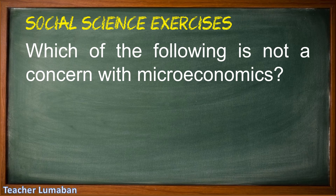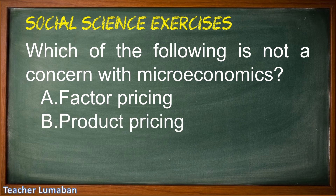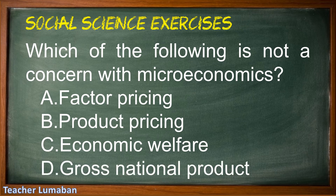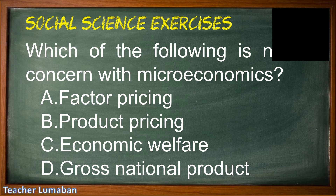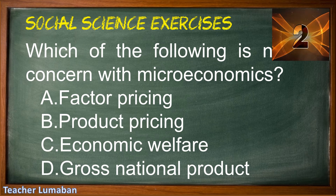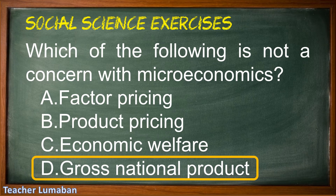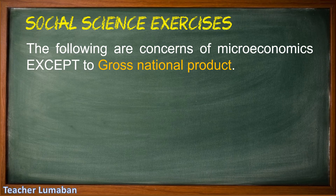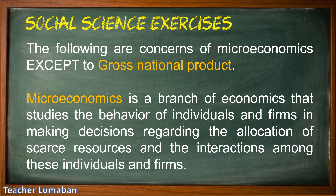Which of the following is not a concern of microeconomics? Letter A factor pricing, Letter B product pricing, Letter C economic welfare, Letter D gross national product. The correct answer is Letter D, gross national product. The following are concerns of microeconomics except gross national product. Microeconomics is a branch of economics that studies the behavior of individuals and firms in making decisions regarding the allocation of scarce resources.